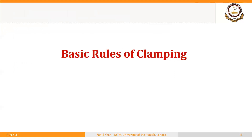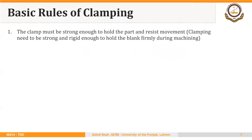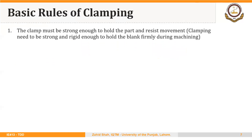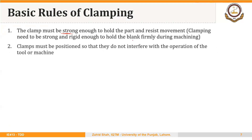Here we will discuss some basic rules of clamping. The first rule is that the clamp must be strong enough to hold the part and resist movement — clamping needs to be strong and rigid enough to hold the blank firmly during the machining operation so that the part does not move or get pulled out of the jig or fixture.